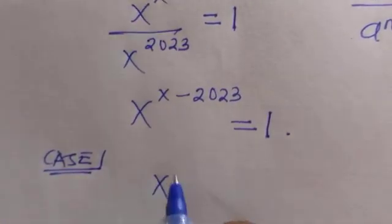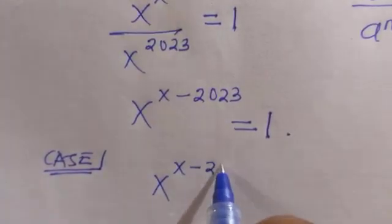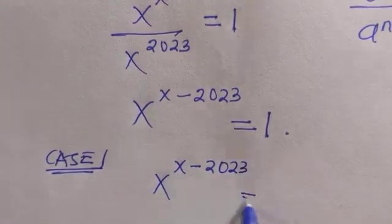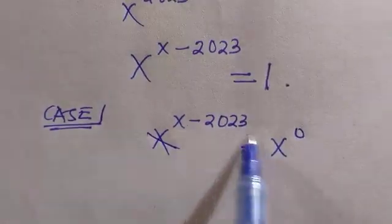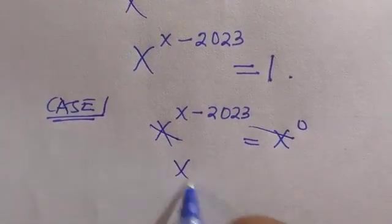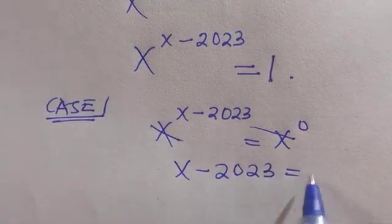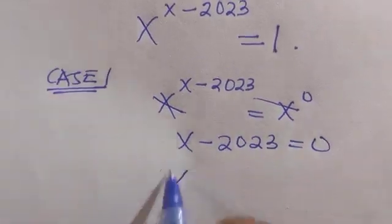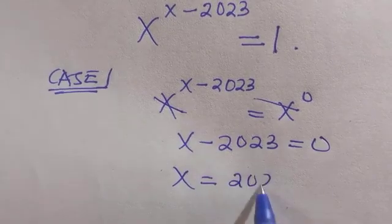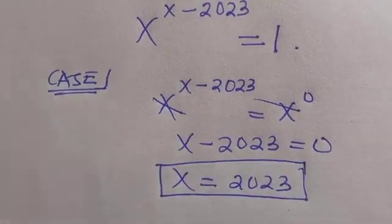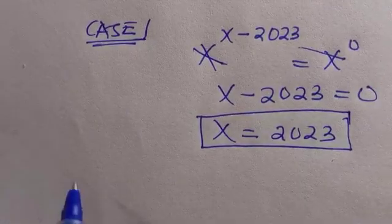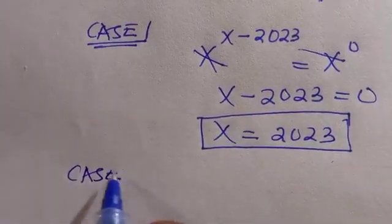By replacing this as X raised to power X minus 2023 equals X raised to power 0, if the bases are equal we have X minus 2023 equals 0. Therefore X equals 2023, which satisfies this problem.